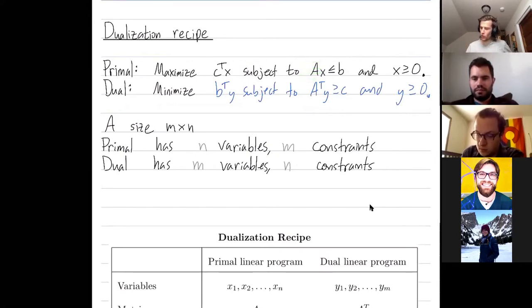Then when you dualize you transpose this matrix so now our vector y has m variables and we've transposed this matrix so now this A transpose has n rows so we have n constraints. So the number of variables becomes the number of constraints and vice versa.